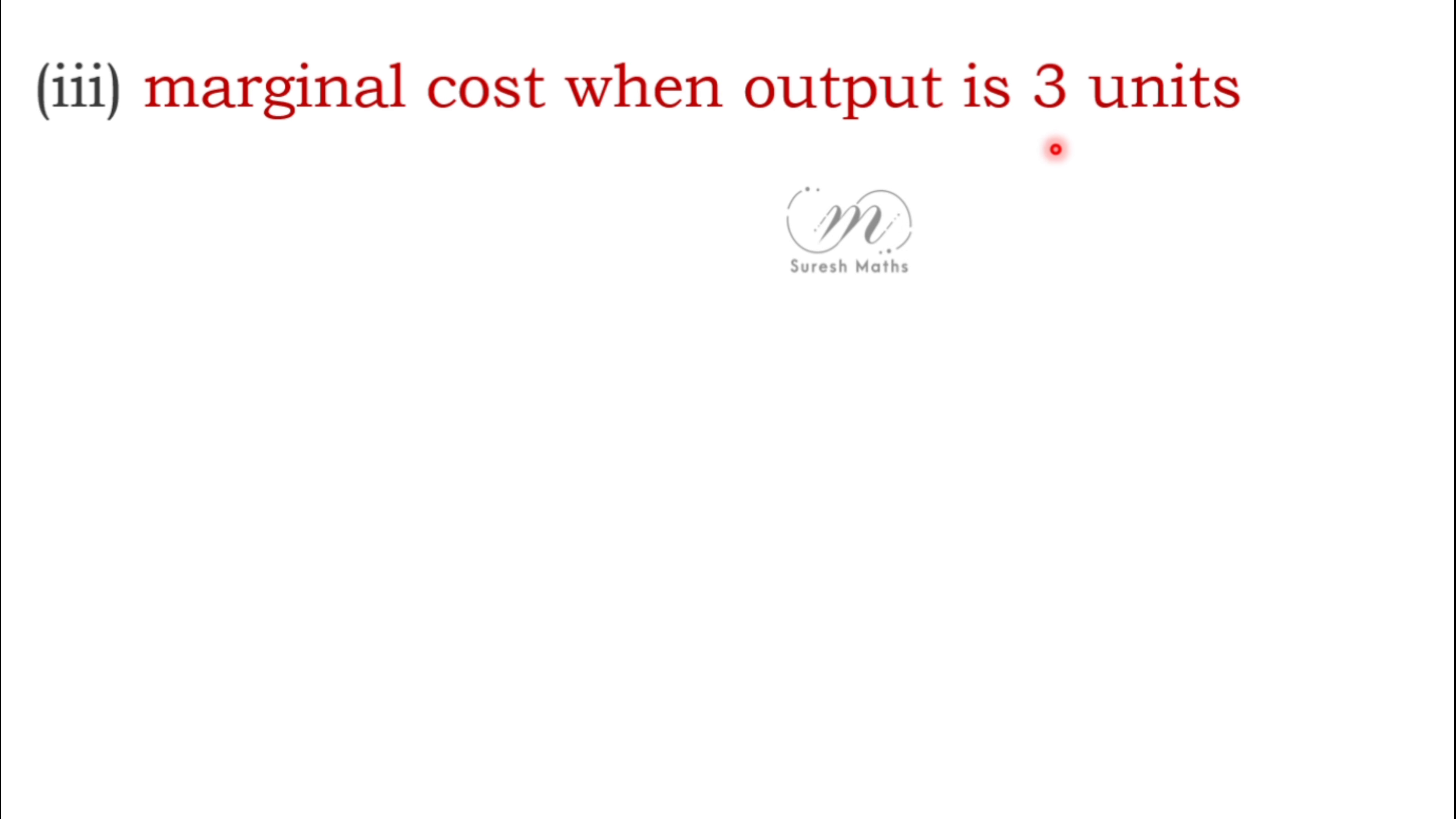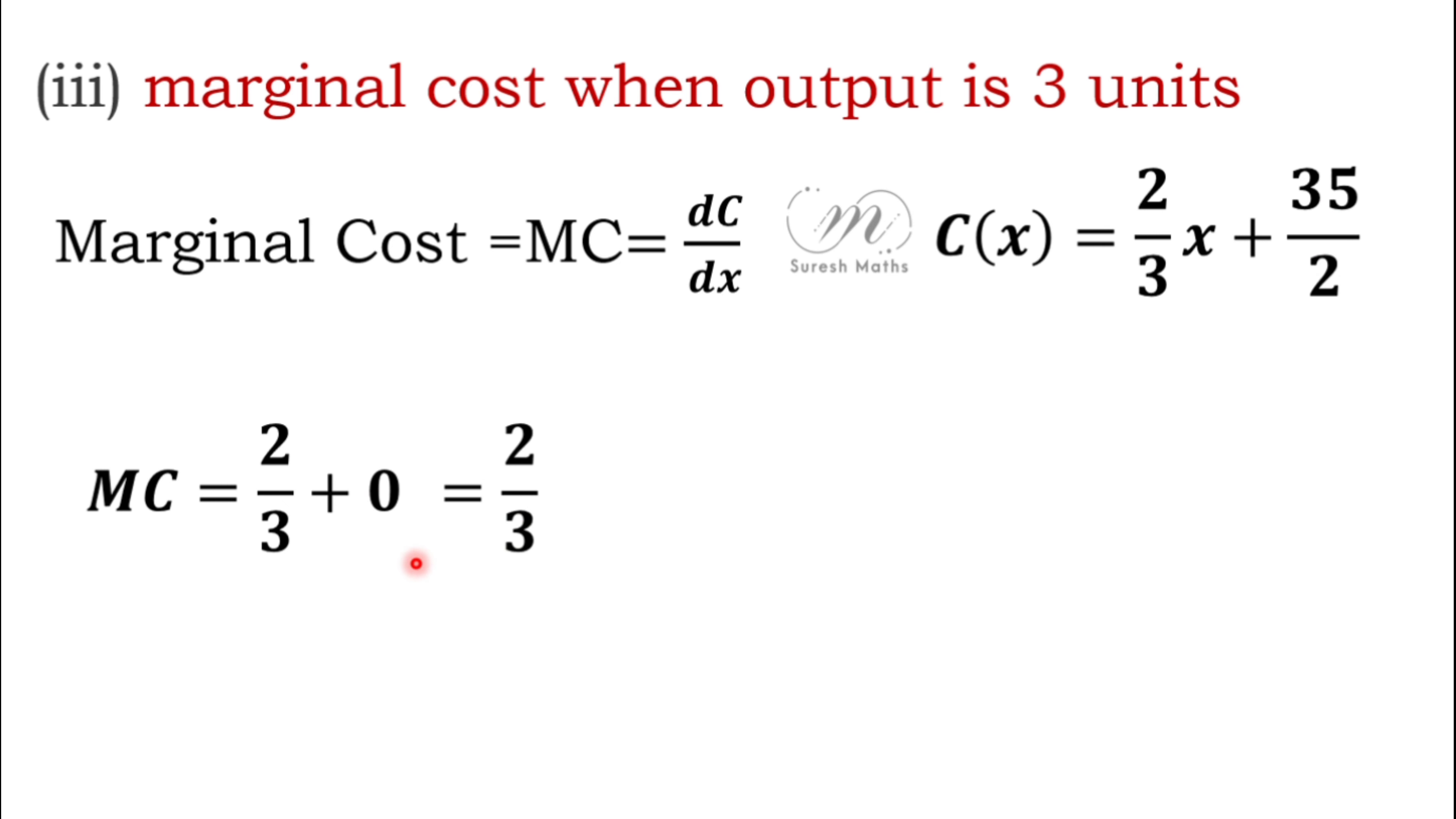Marginal cost when x equals 3. Marginal cost formula is dC/dx, the derivative of C with respect to x. C = 2/3x plus 35/2. MC = 2/3 times 1 equals 2/3. The constant 35/2 differentiates to 0. MC equals 2/3.